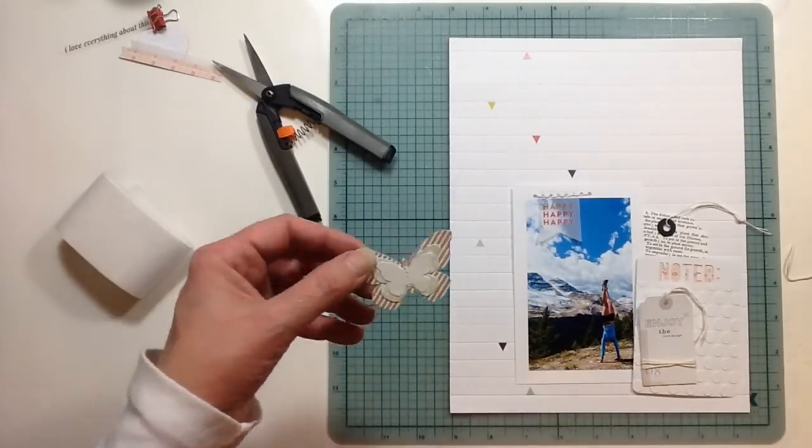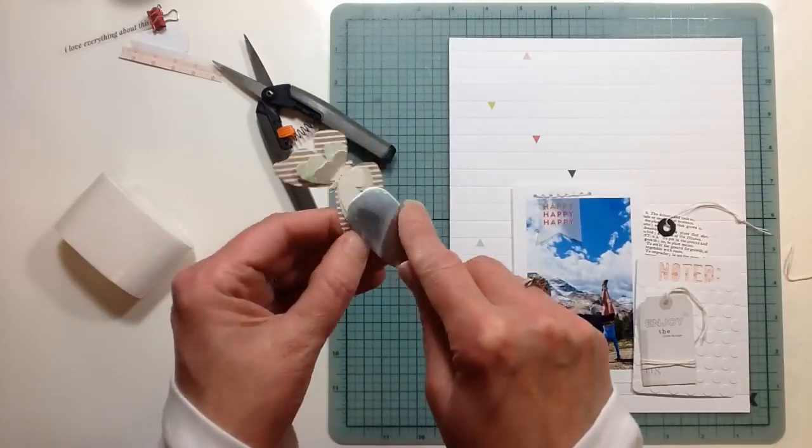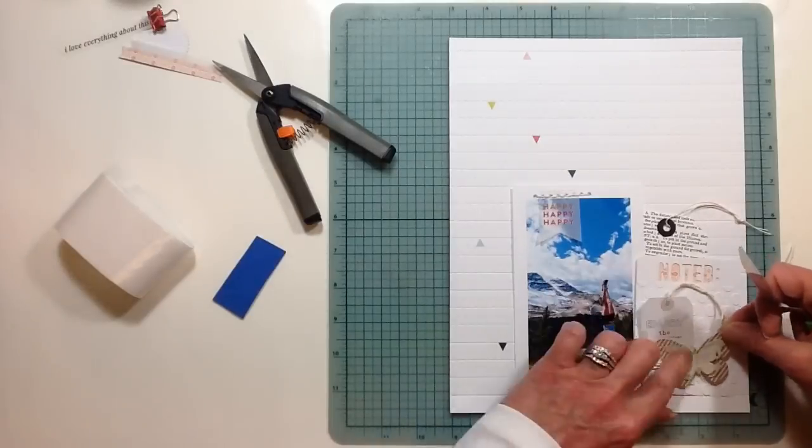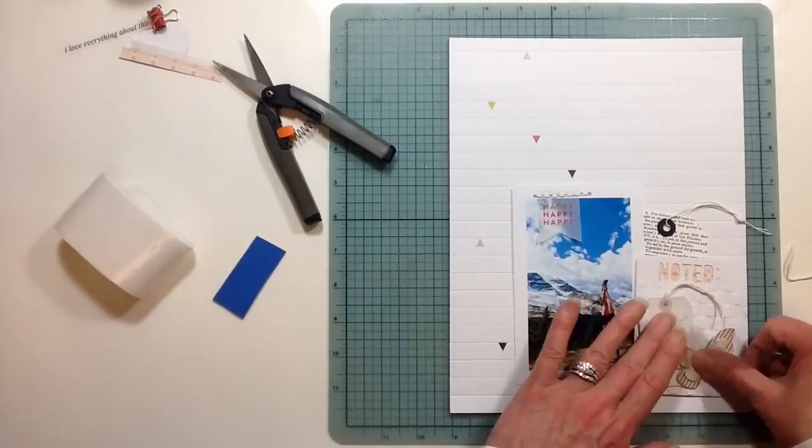These butterflies that come in the kit are so pretty too. I'm going to use my tool there to fluff it up a little bit, bring the wings up, and get that down in the right corner.